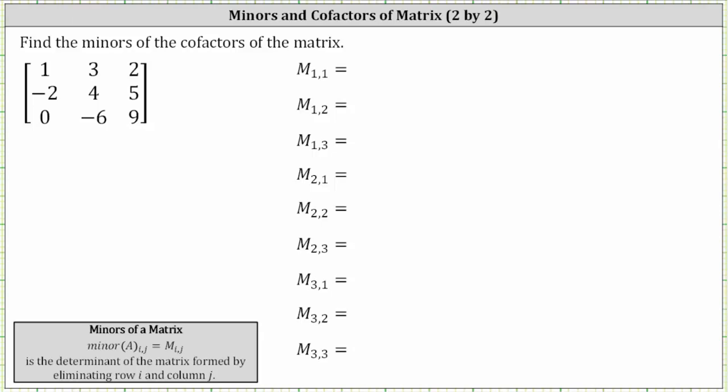We're asked to find the minors and cofactors of the given three by three matrix. Let's begin by determining the minors. Minor i comma j is equal to the determinant of the matrix formed by eliminating row i and column j.